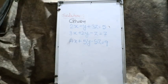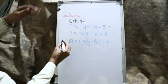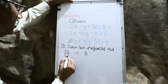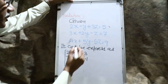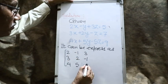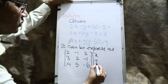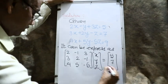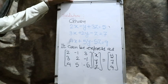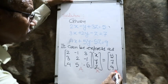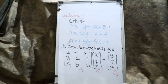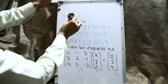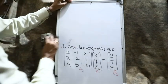Given system of equations can be expressed in terms of matrices. The coefficient matrix is [2, −1, 3; 3, 2, −1; 4, 5, −5], matrix X is [x; y; z], and matrix B is [5; 7; 9]. So AX = B, where A = [2, −1, 3; 3, 2, −1; 4, 5, −5], X = [x; y; z], and B = [5; 7; 9].